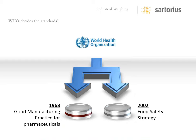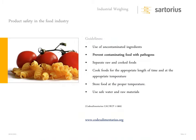In 2002 it became the food safety strategy. The guidelines that GMP came with include using uncontaminated ingredients, preventing contamination with pathogens, separating raw and cooked foods, cooking foods for the appropriate length of time, storing foods at the proper temperature, and using safe water and raw materials. You'll find references in most of these slides where you can go to get more information.